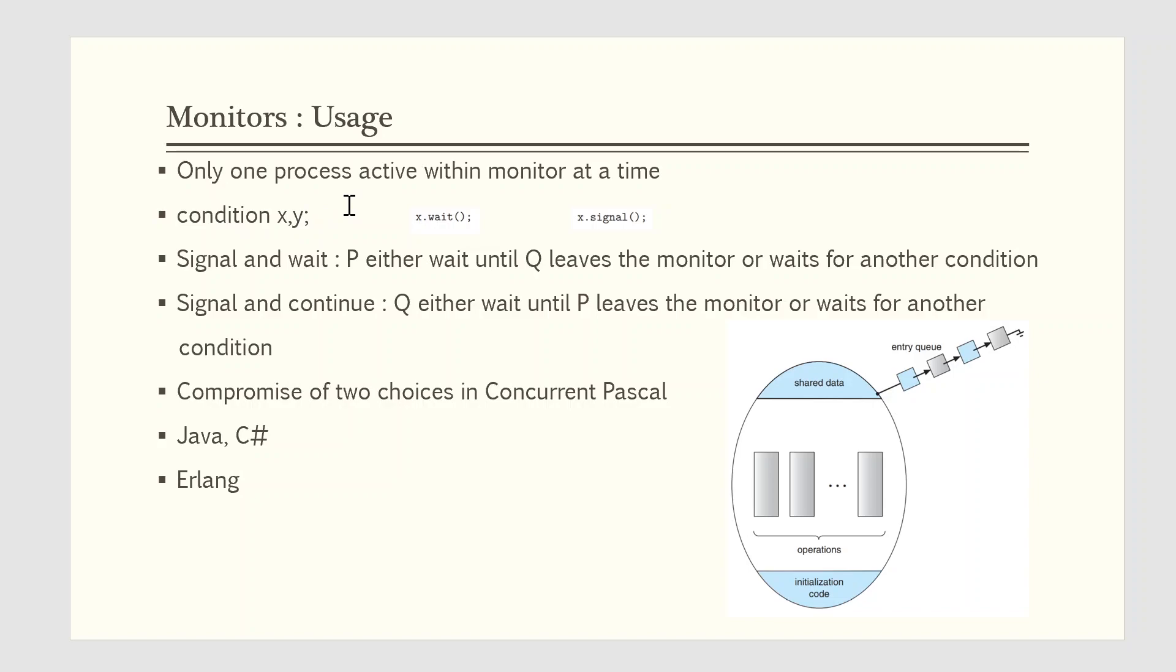The only operations that can be invoked on a condition variable are wait and signal. The operation x.wait means that the process invoking this operation is suspended until another process invokes x.signal. The x.signal operation resumes exactly one suspended process. If no process is suspended, then the signal operation has no effect. That is, the state of x is same as if the operation had never been executed. Contrast this operation with the signal operation associated with semaphores, which always affects the state of the semaphore.